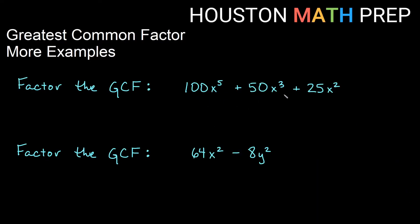Next example: 100x to the 5 plus 50x cubed plus 25x squared. Looking at 100, 50, and 25, I can pull out a common factor of 25 — they all have at least 25 in common. They also all have at least x squared, so 25x squared is our greatest common factor. 25x squared times what gives me 100x to the 5th? 25 times 4 gives the 100, and x squared times x cubed gives x to the 5th. For the next term, 25 times 2 gives 50, and x squared times x gives x cubed.